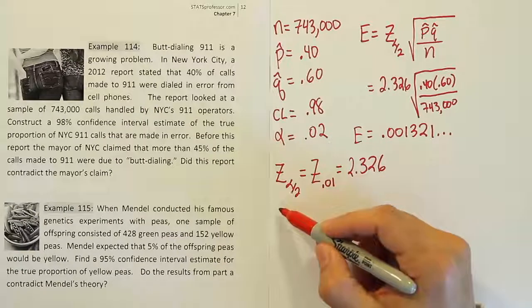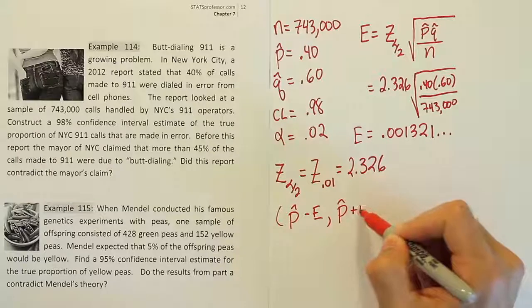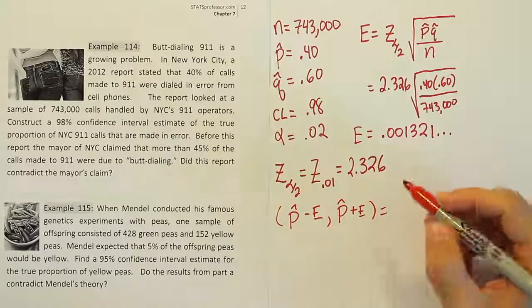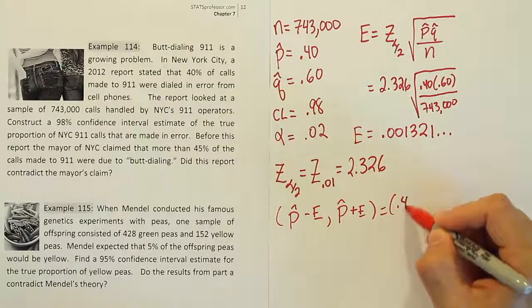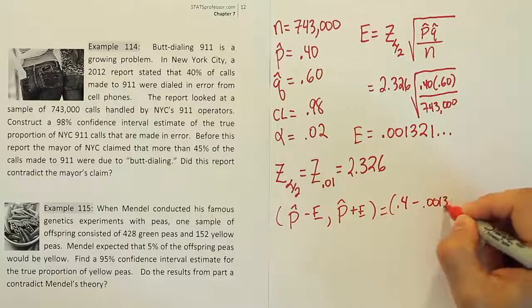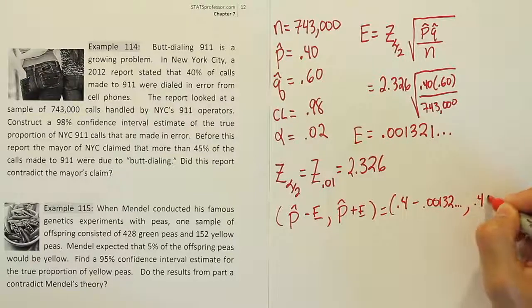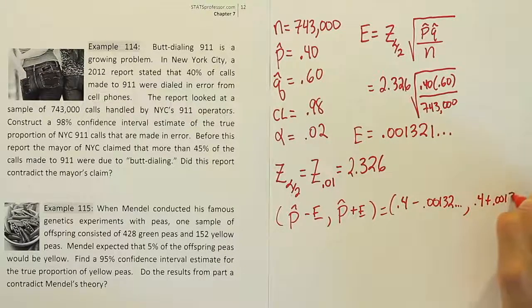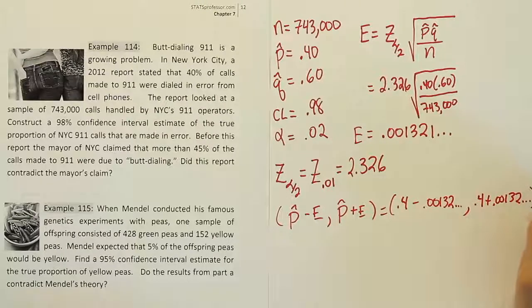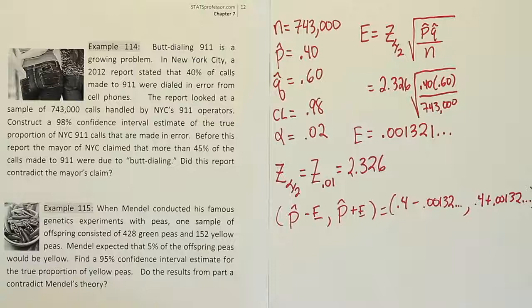And let's continue on with the problem now. The last step, remember, is to just do p hat minus E, p hat plus E. Okay, so the p hat here is 0.4. And we'll subtract off that E of 0.00132 dot dot dot. And then, same thing again on the other side, 0.4 plus 0.00132 dot dot dot. Okay, let's work that out and see what it ends up giving us.